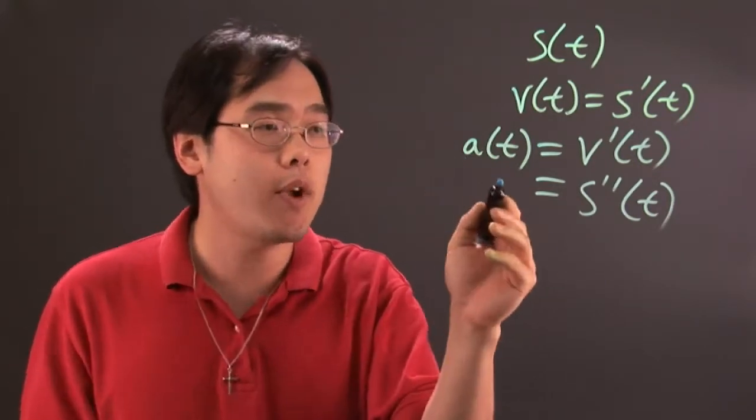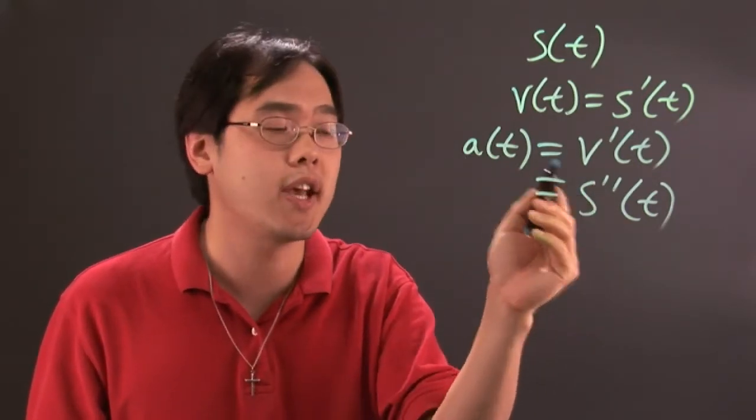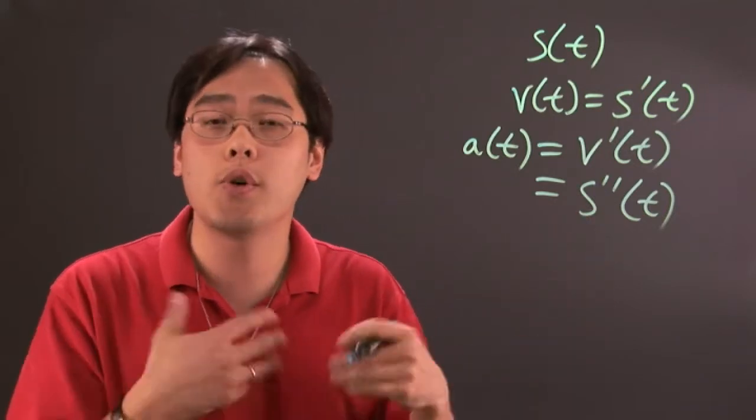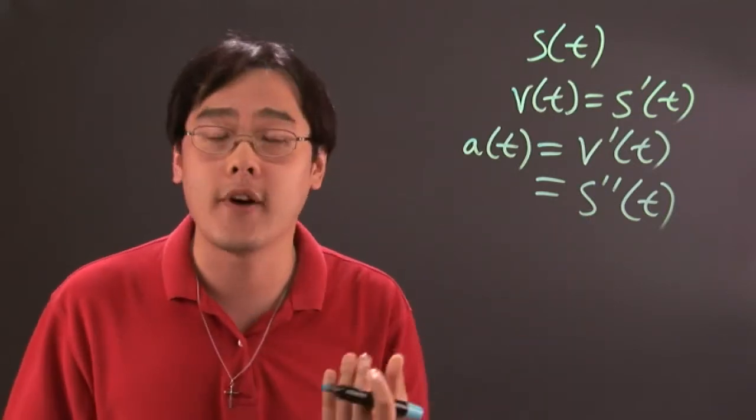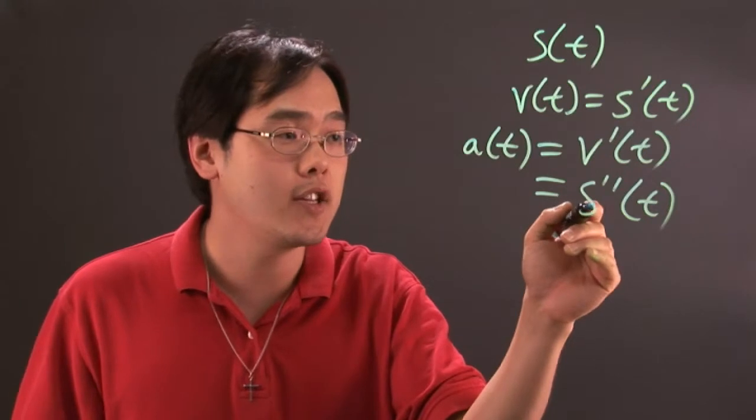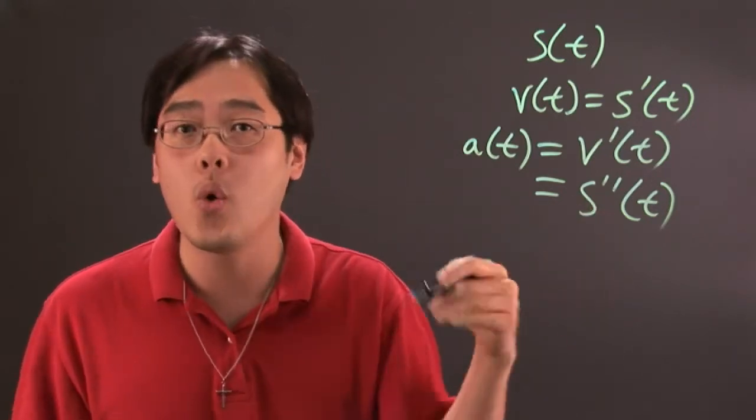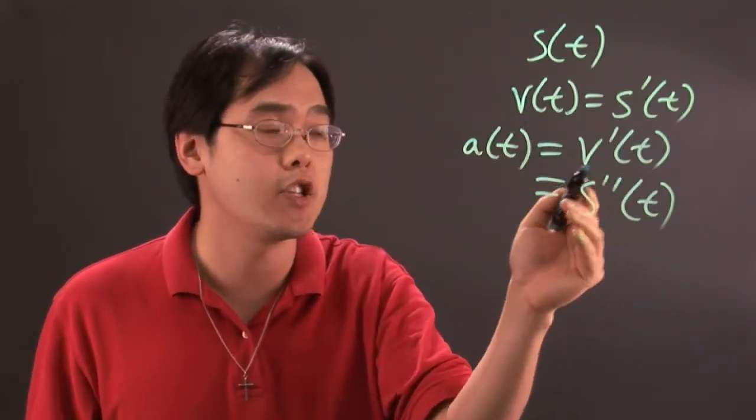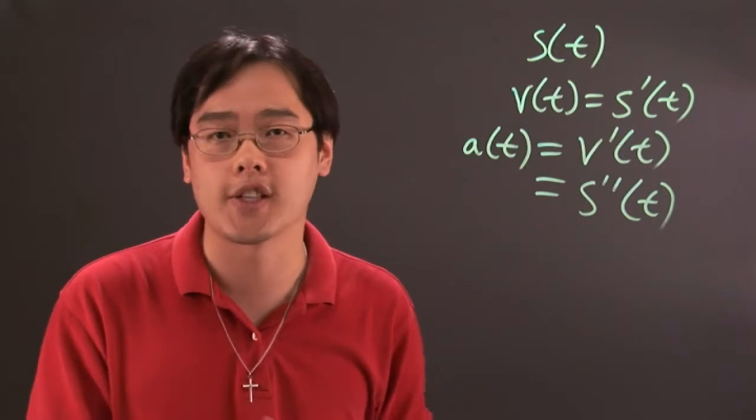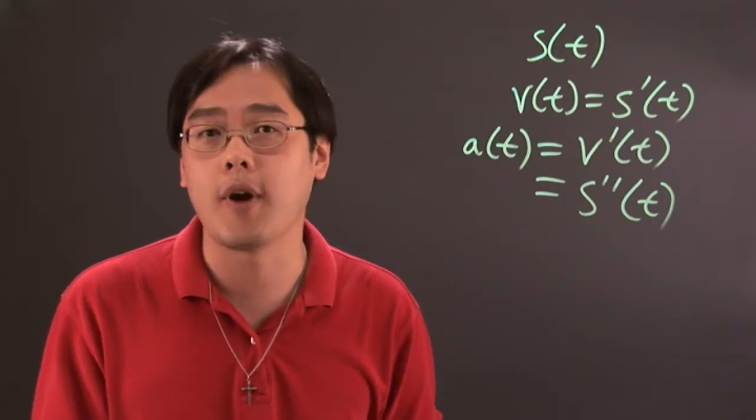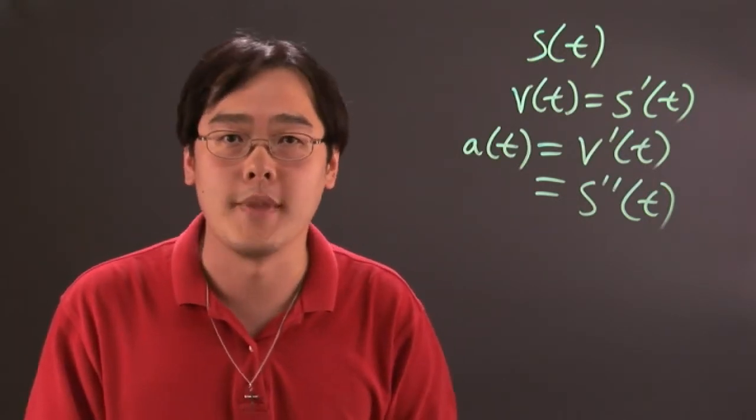So acceleration is the change in velocity which is the second change in speed. So when you want to approximate acceleration function, depending on the function that you have, take the second derivative of the speed function that you're given or if you're given the velocity function, just take the derivative of it and you'll get the acceleration function. And then you can approximate depending on what kind of values that you have.